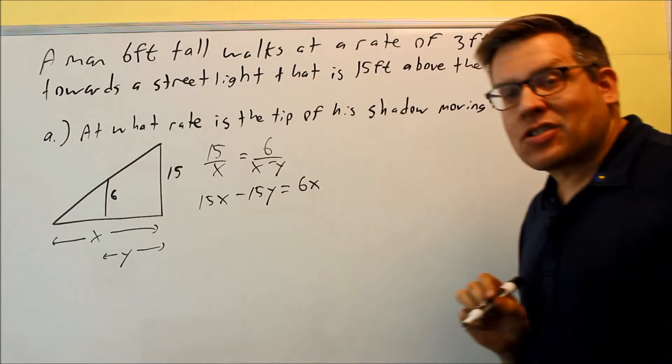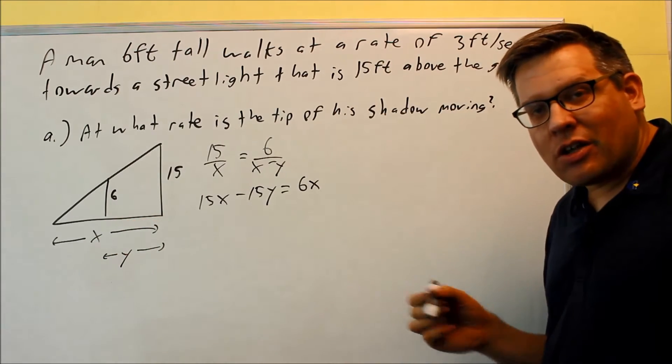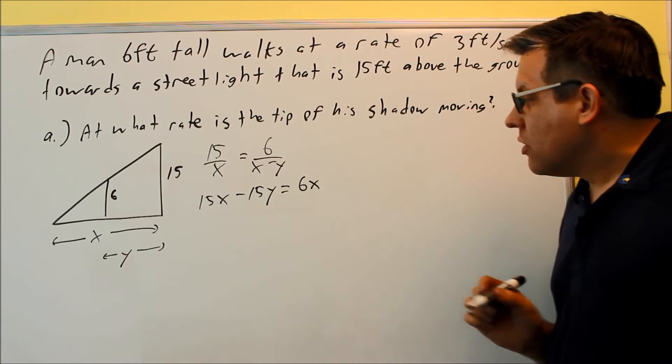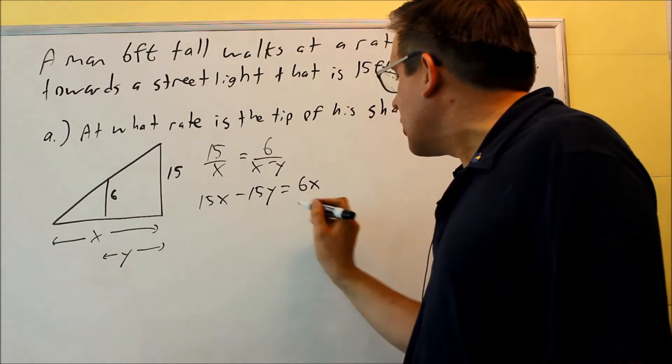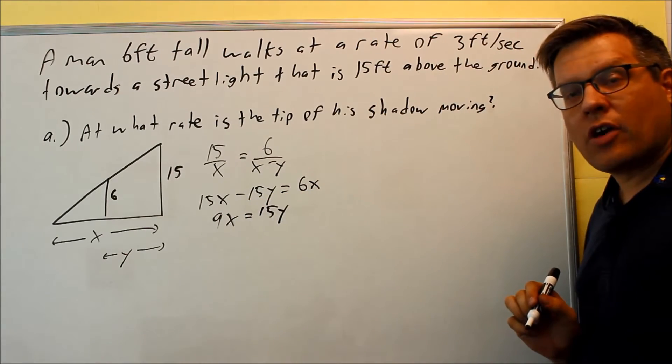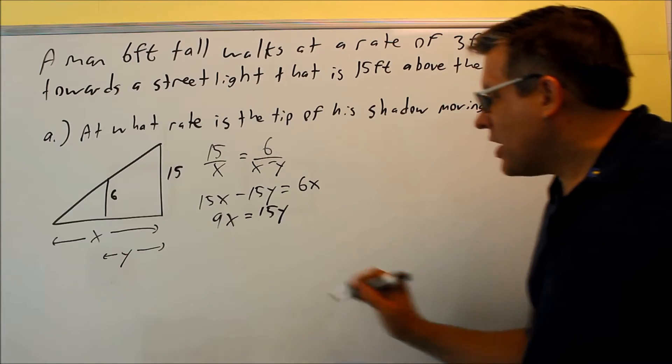That has to do with dx. In fact that's going to be a dx dt later when we take the derivative. So I'm going to solve this for x. So I'm going to subtract the 6x. I get 9x is going to equal 15y when I move that over.